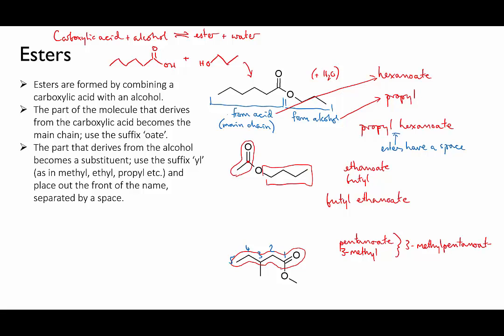But then we need to indicate the ester substituent here. That has only one carbon, so it's going to be called methyl as well. Because it's the special ester substituent and not stuck to the main chain, it gets put out the front of the name as a separate word. So that gives us methyl 3-methylpentanoate.